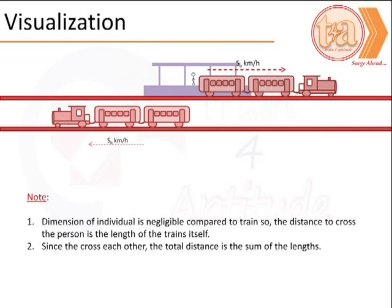We note here that the dimensions of the individual being negligible, the distance covered to cross him would be nothing but the length of the train itself. In order to cross each other, the total distance that the trains would need to cover is the sum of the lengths of each train.